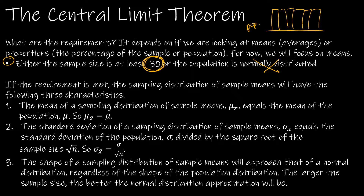The central limit theorem says three things: first, the shape is going to be normal — and the greater the sample size n, the better the normal distribution approximation will be. Second, we can describe that normal distribution with a mean equal to the mean of the population. Third, the standard deviation is equal to the standard deviation of the population divided by the square root of n.